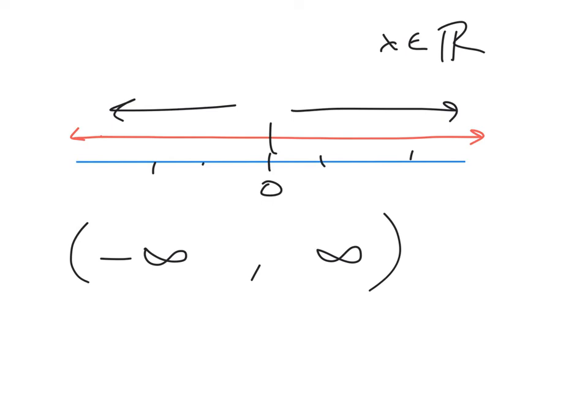Alright so this once again is a little bit quicker. So when you're dealing with something that goes one way, if it goes off forever one way that's going to go towards negative or positive infinity. So if you have something like x is greater than or equal to 3, that tells us that 3 is going to be our lower bound and it's going to go off to positive infinity.